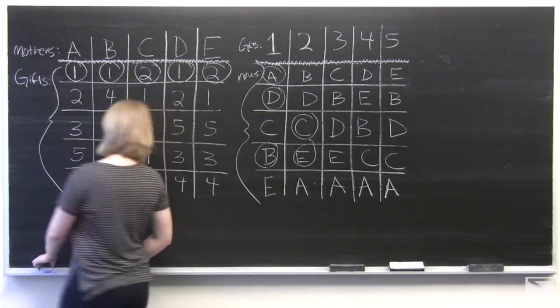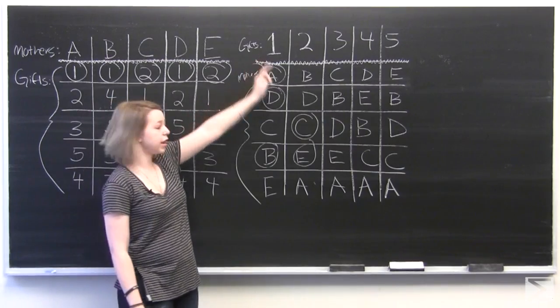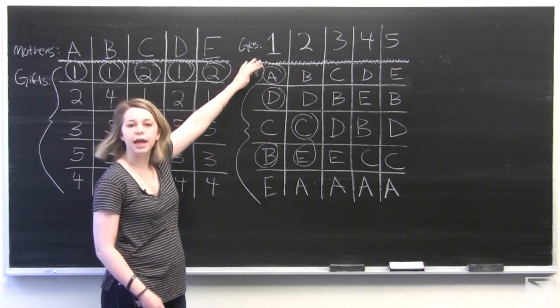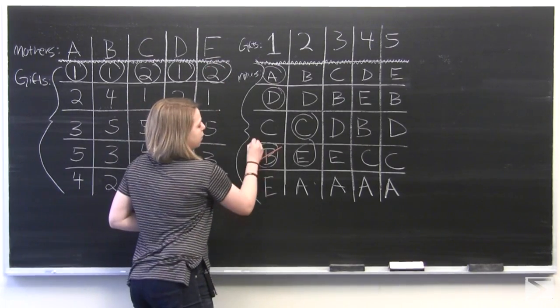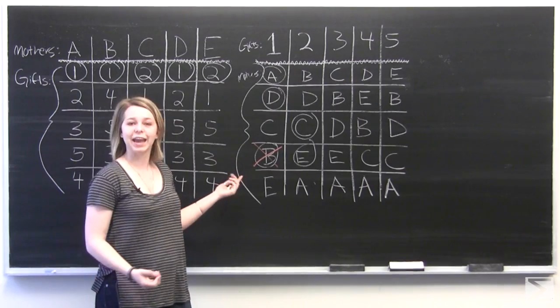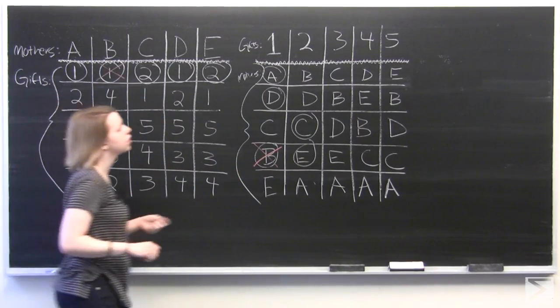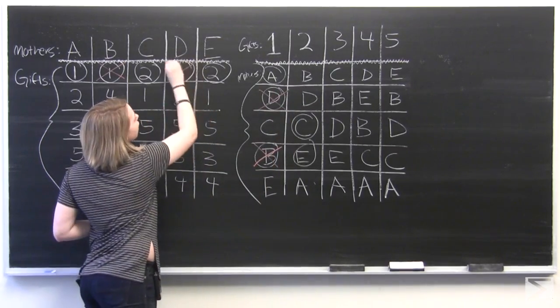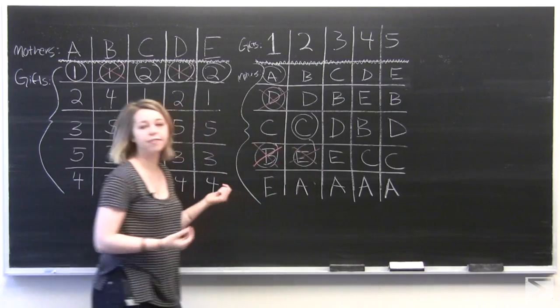And so here a problem arises. We've got three different mothers who all want gift number one and two mothers who want gift number two. And so then the child's preference comes into play. Mother B, unfortunately, can't have gift number one, and so we cross her off from both charts. And Mother D can't have gift number one. And Mother E cannot have gift number two.